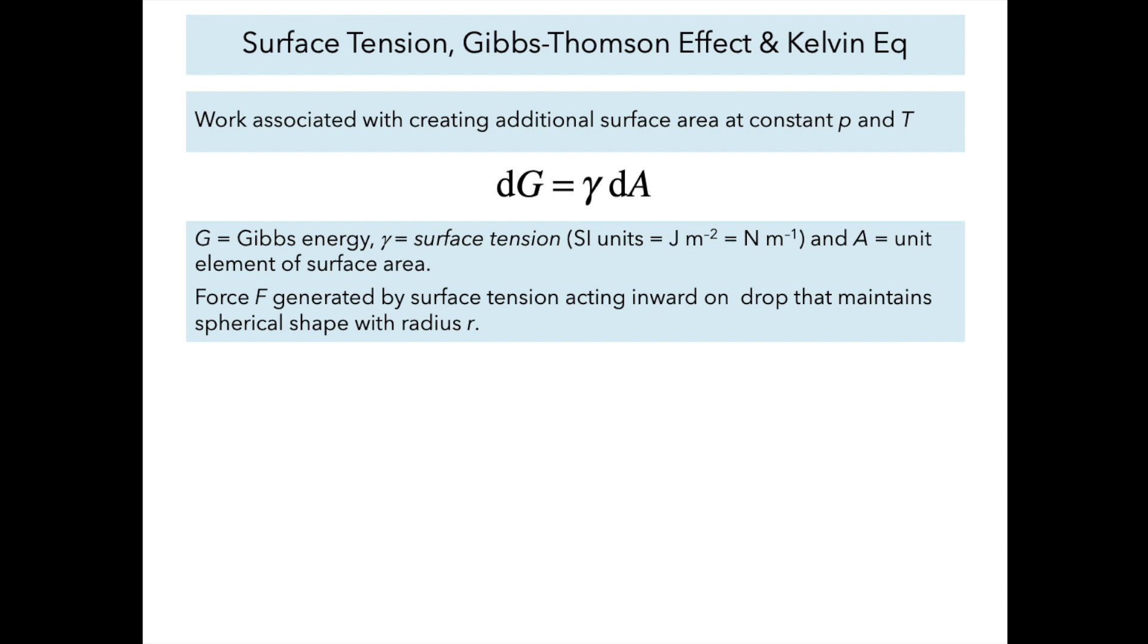The surface tension generates a force acting inward on the drop, which maintains the spherical shape. A drop attains a spherical shape because a sphere has the smallest surface area per unit volume. A system evolves to minimize its Gibbs energy, so the system is trying to minimize how much surface area is formed, hence a drop is spherical with radius r.